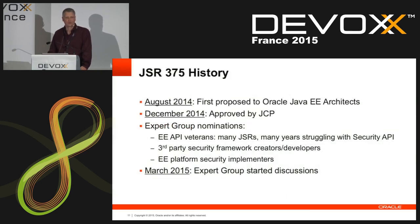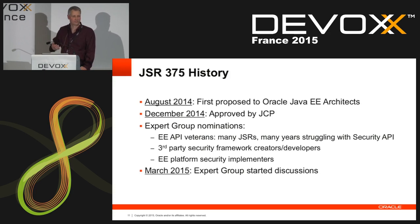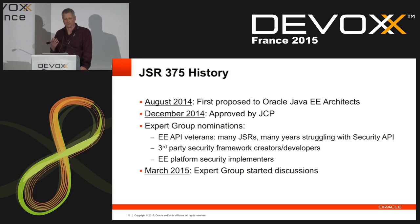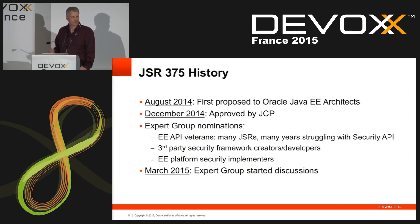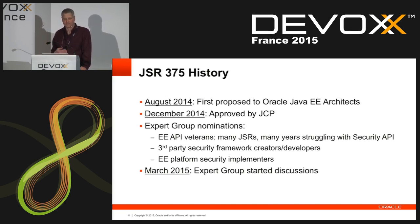JSR 375 already has a history — it's a brand new JSR and it has a history because I actually proposed this internally to Oracle last summer. Within Oracle, when you want Oracle to sponsor a JSR, there's a process where you have to present the proposal to e-architects. I presented this to the WebLogic security group and eventually to management. Oracle approved it and we presented it to the JCP, who also approved it. In December 2014, it was approved by the JCP.